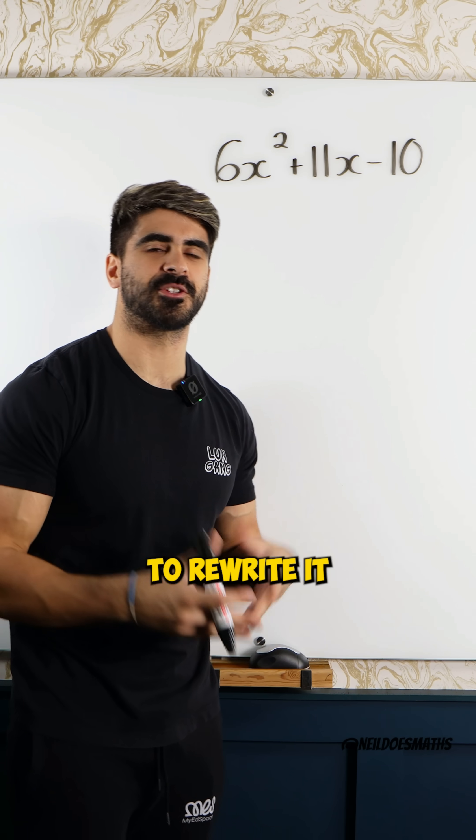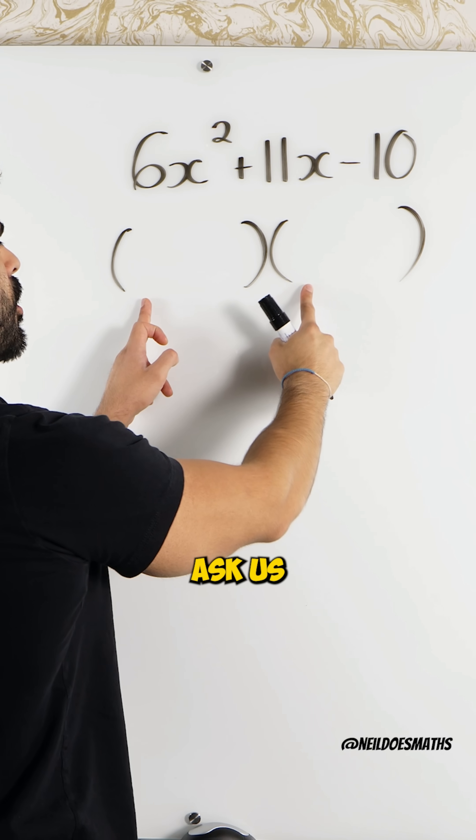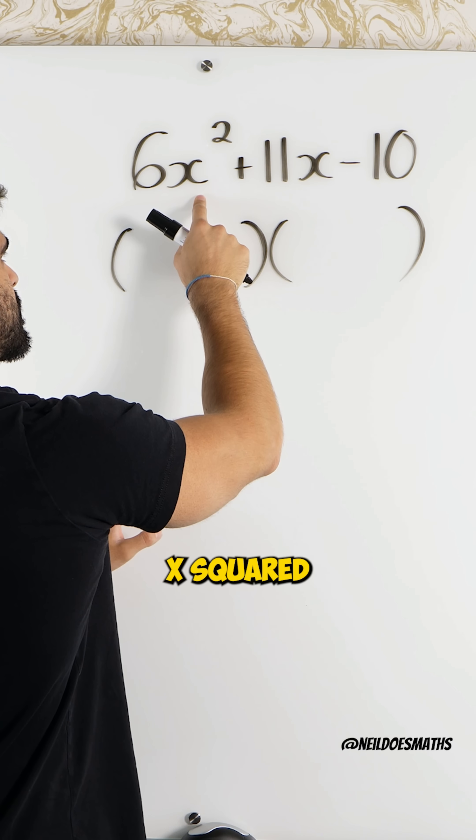To factorize a quadratic means to rewrite it as a product of two. Now, these two ask us what multiplies together to give you 6x squared.